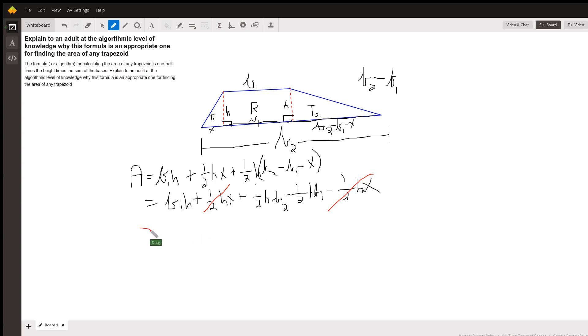And now I can factor H from each term and I get B sub 1 plus one-half H B sub 2 minus one-half H. Whoa, I didn't write that very well. One-half, my wrist is slipping. H B sub 1.